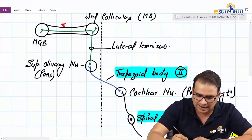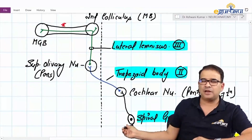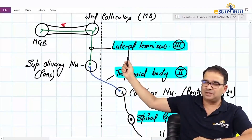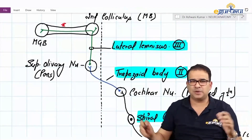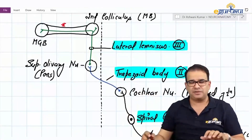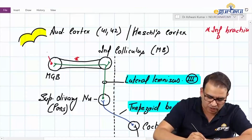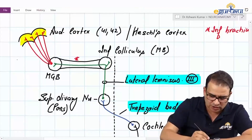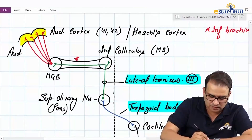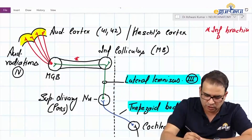The lateral lemniscus is what we were waiting for. First-order is the spiral ganglion, second is the trapezoid body, third-order is the lateral lemniscus which is on the contralateral side. All lemnisci are on the contralateral side, which is why injury to a lemniscus always has a contralateral effect. The fourth-order neuron begins from the medial geniculate body and radiates into the auditory cortex or Hessel's cortex — that is the auditory radiation.